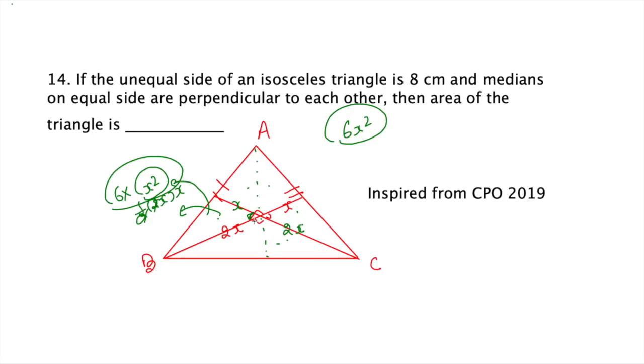Now, what is given? This one is 90 degrees, and the unequal side—meaning these two sides are equal—this one is 8.